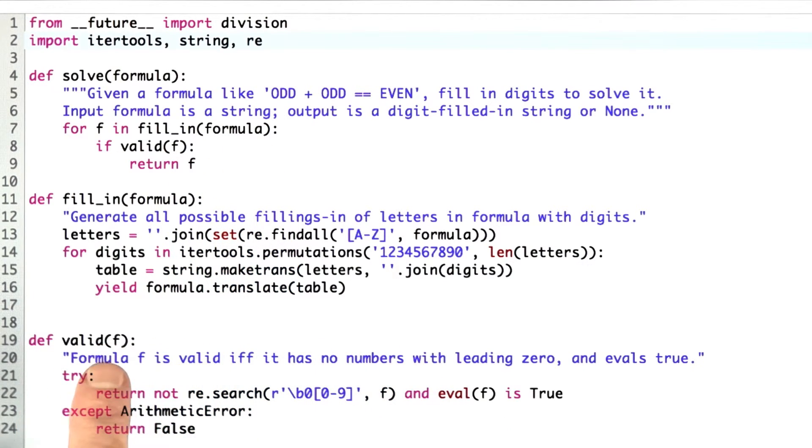Valid is pretty simple. It's almost like asking, is valf true? If it were that simple, I would just put it inline up here. But it's not quite that simple. I need to try and except to catch the arithmetic error.